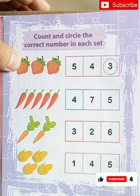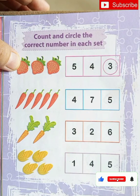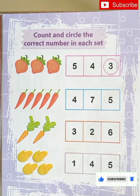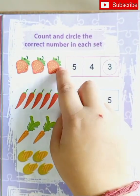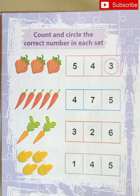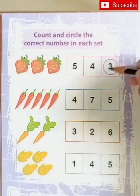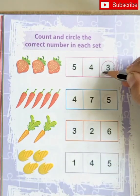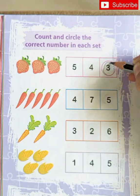This is strawberry. How many strawberries are there? 1, 2, 3. Make a circle on number 3.